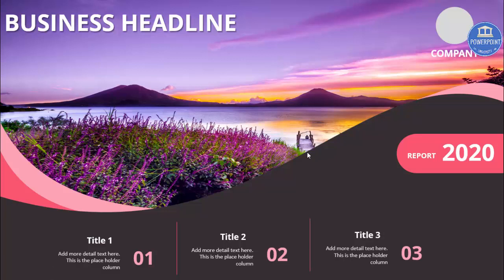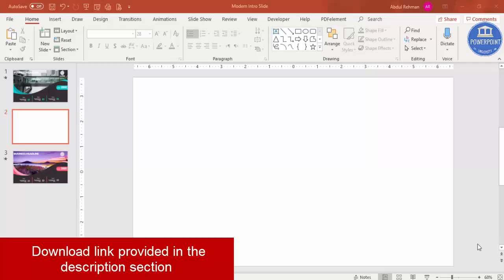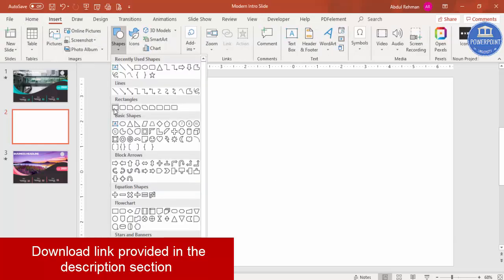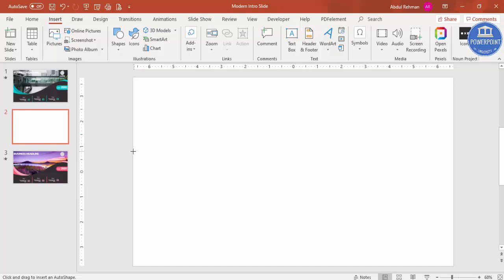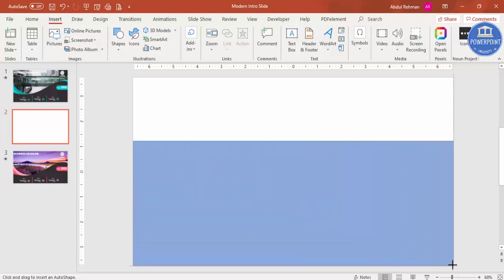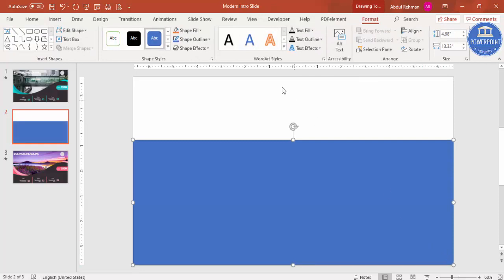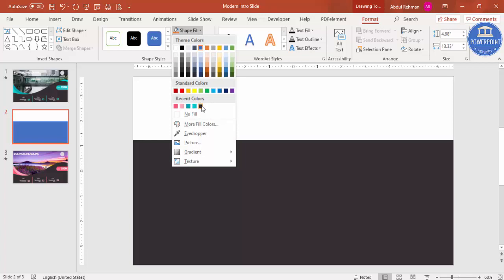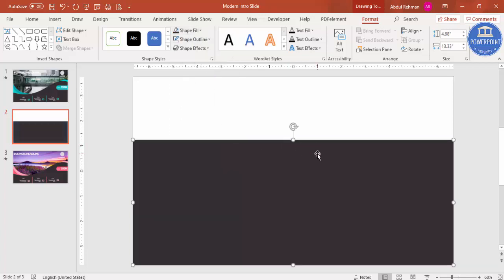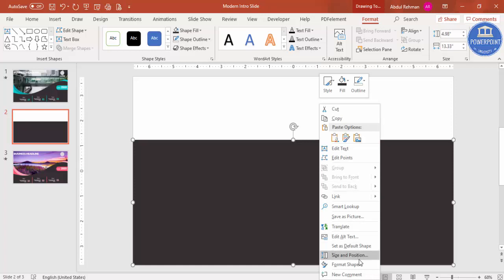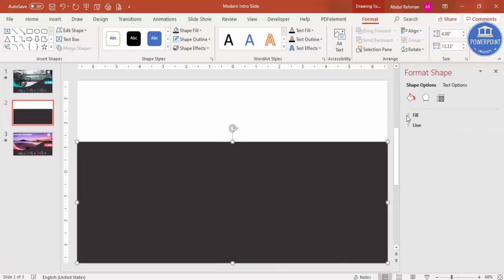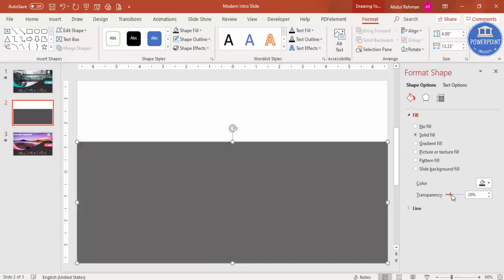Let's see how to do this in PowerPoint. Add a blank slide, go to Insert > Shapes, and select a rectangle. Draw the rectangle covering more than half of the slide. Set shape outline to no outline. For the shape fill, give any color of your choice. Right-click, go to Format Shape > Fill, and make it somewhat transparent. Then I want to give it a curved shape.